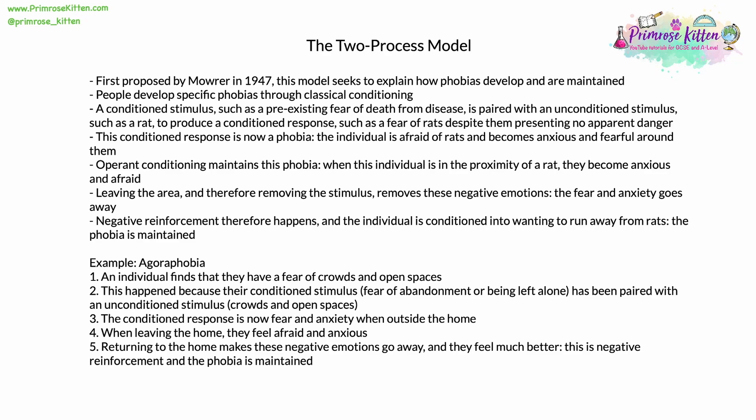When these two are combined, they produce a conditioned response (CR), such as a fear of rats, despite them presenting no obvious and apparent danger. That fear is irrational and it becomes a phobia. That individual is afraid of rats, and in their presence, they become anxious or irrationally afraid. Operant conditioning then maintains this phobia. When the individual is in the proximity of a rat, they become anxious and afraid. Leaving the area and the rat, and therefore removing the stimulus, removes these negative emotions. Because of this, negative reinforcement happens — the individual is conditioned into wanting to run away from rats. The phobia is maintained.